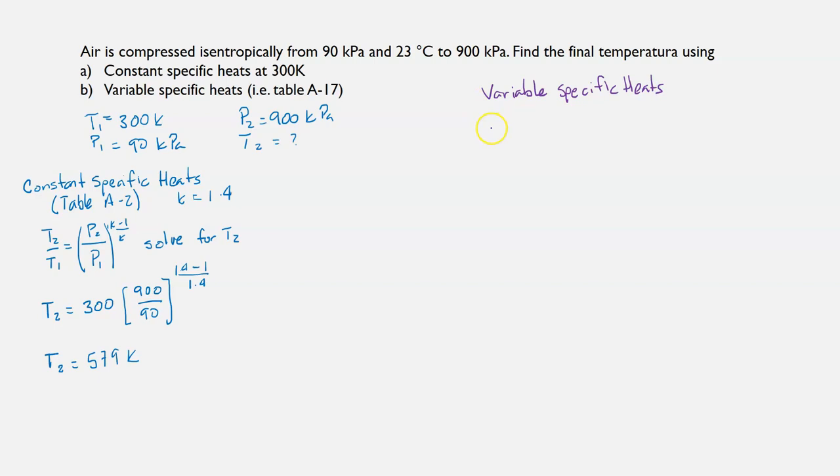And we know that pr is only a function of temperature. So for a given temperature, for 300 Kelvin, you look into table A-17 and we can find pr1. So let's move to the table.